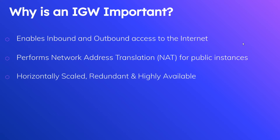The third reason the internet gateway is important is that it is a horizontally scaled, redundant, and highly available component in your VPC architecture. When folks look at architecture diagrams they identify the internet gateway as a singular point of failure, which is technically true, but AWS handles this — there are multiple instances that can handle traffic, likely multi-AZ redundancy, and auto-scaling or health checks ensuring it's always running. Additionally, the internet gateway is not a hardware component; it is a software component, so there's no hardware you need to pay for.